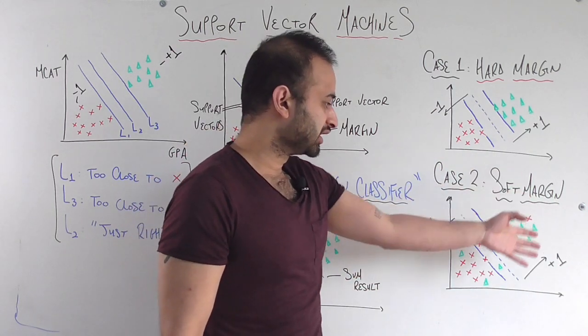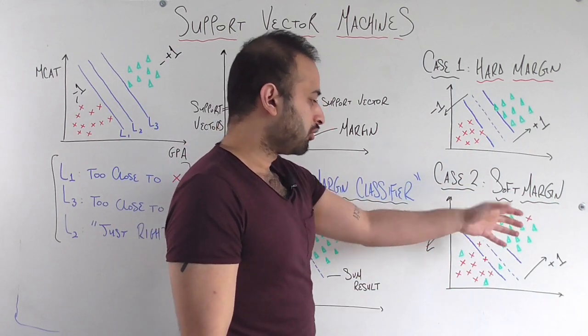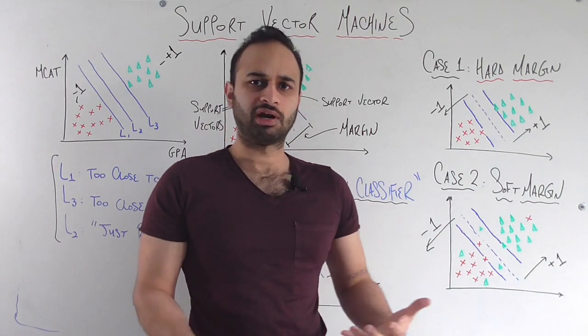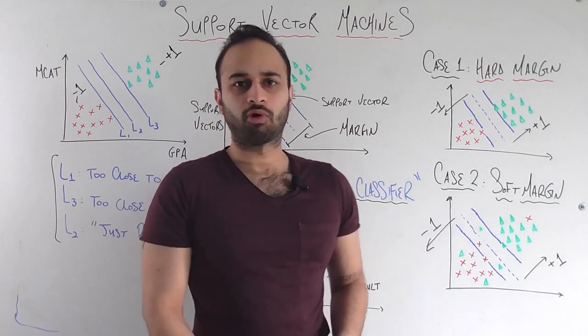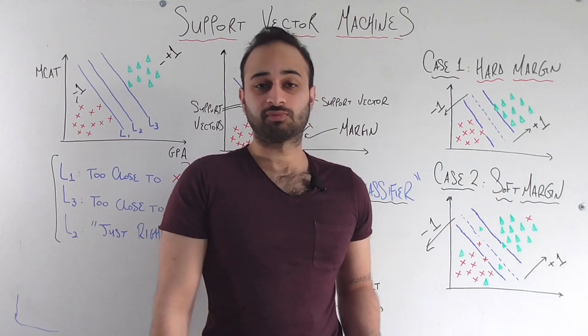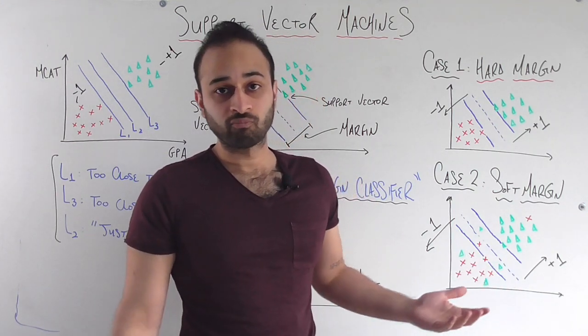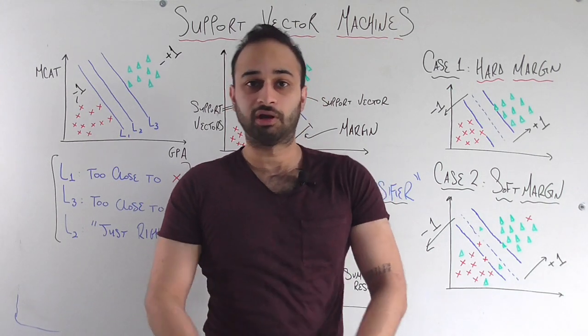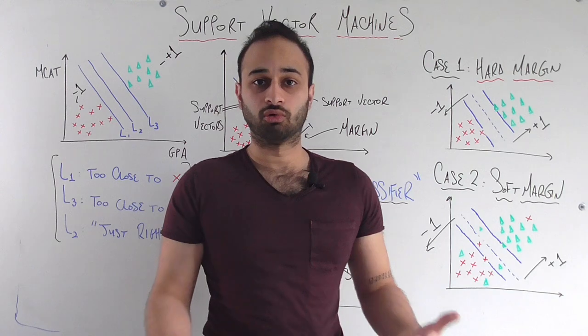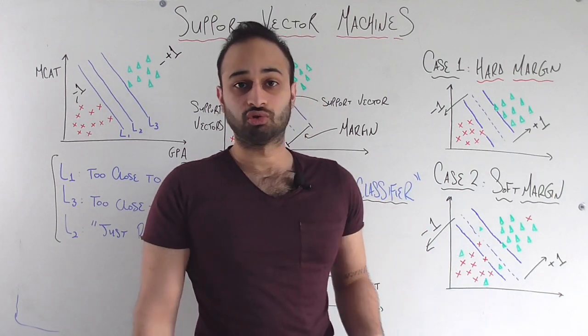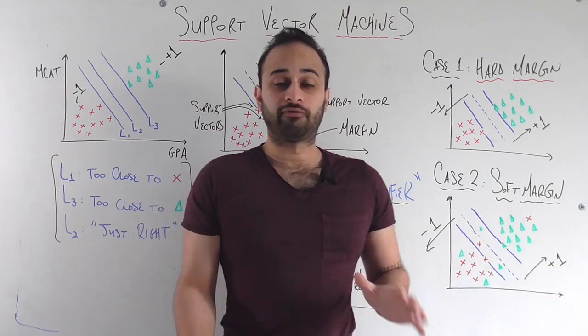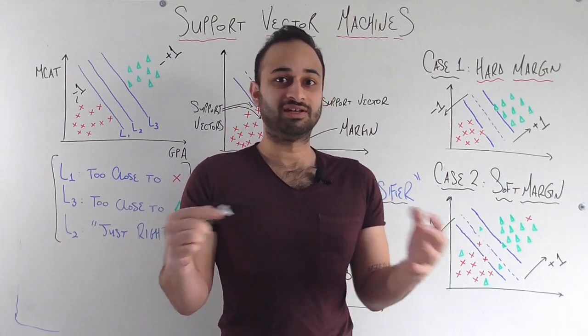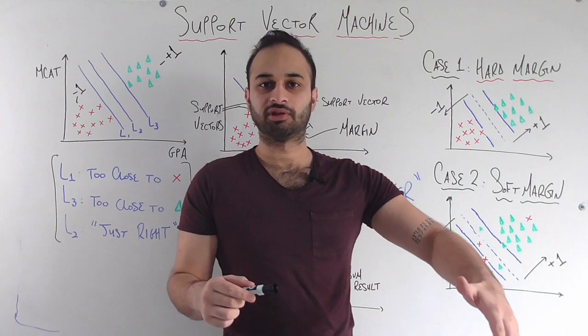For example, consider this more realistic data where you have more or less a green triangle class and a red X class. But there's a little bit of noise, right? There's other observations that are where we would not necessarily expect. But just because of how the world works, that's where they are. For this context, we only took into account GPA and MCAT. But there's other things that can affect if you get into your top choice school. So those things taken into account, you're going to have some variation in the data. If we were forced to use a hard margin SVM, it just could not deal with this because it needs this clean separation between the classes.